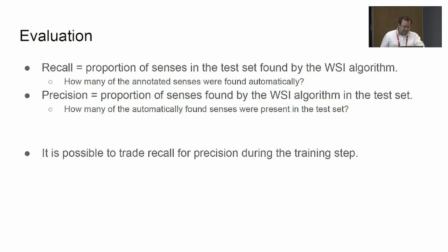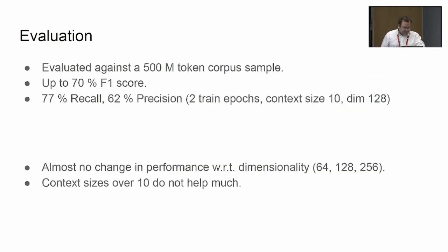We evaluate recall and precision. It's not the standard recall and precision—it's slightly modified because the senses in the test set and the senses in the result are sets and not elements itself. An element was recalled if it was found in the result of the word sense induction algorithm and it was present in the test set, so it's not the clusters whole but only their elements. Precision is the same thing but the complement. As always, we can trade precision for recall during the training step by setting the single parameter of the adaptive skip-gram algorithm.